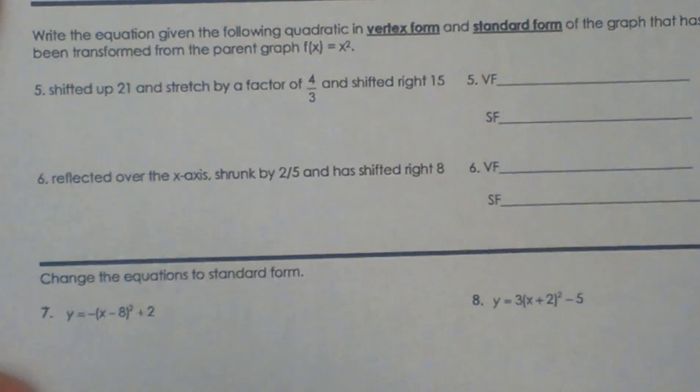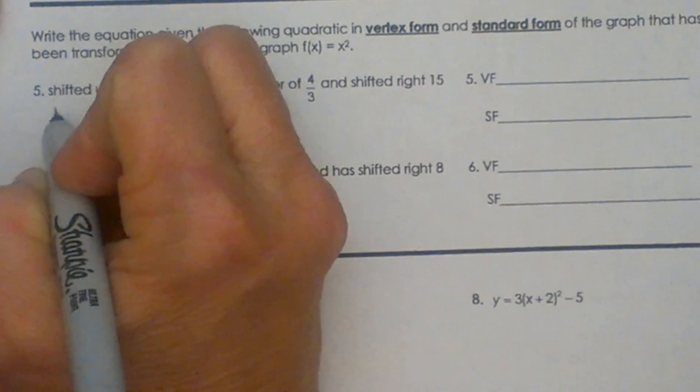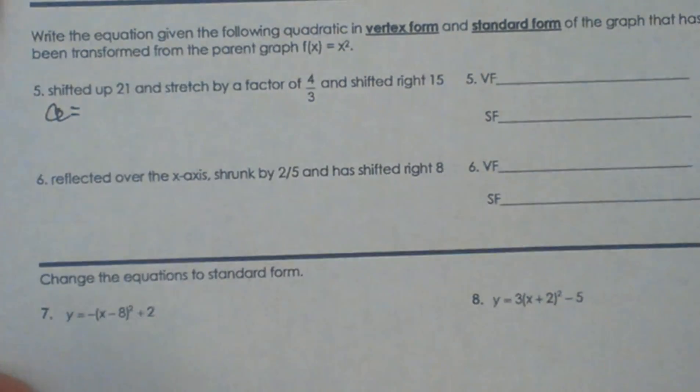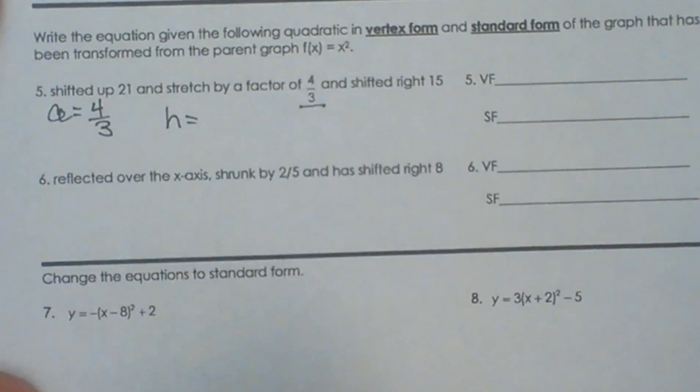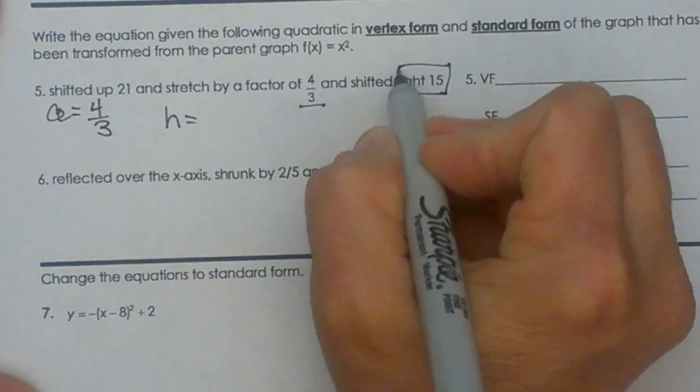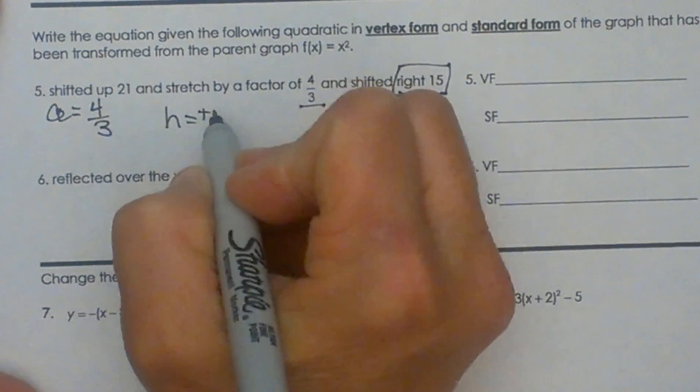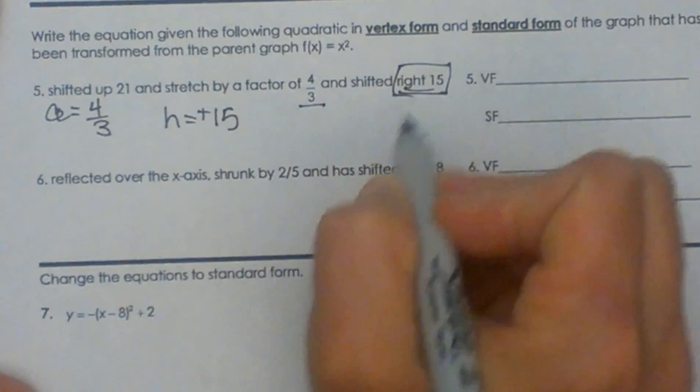So let's identify our a, h, and k. A is our stretch or shrink, so that means it's going to be 4 thirds. Our h is our left and right shift, so that means h is a positive 15 because it says right 15.